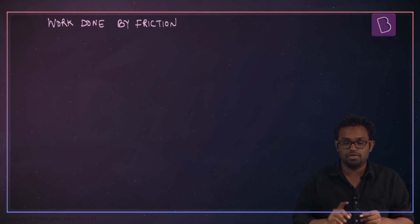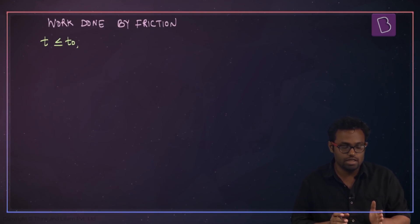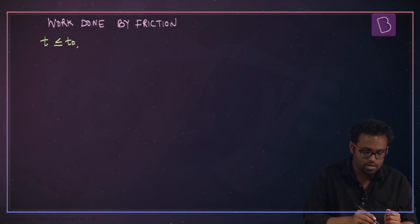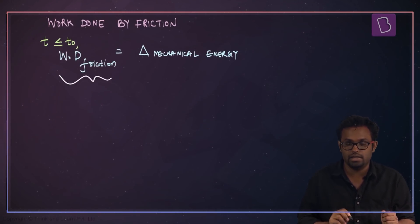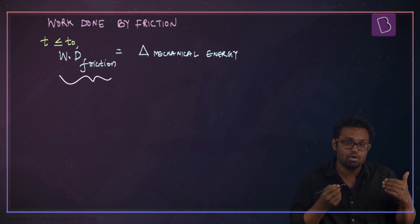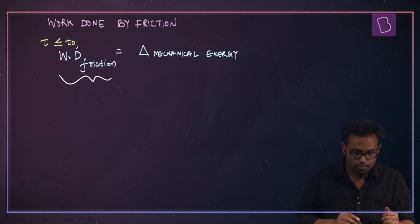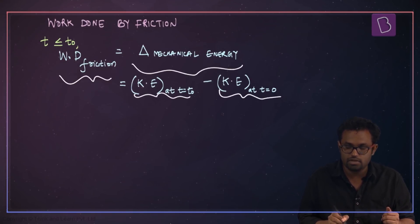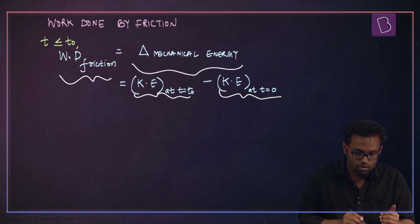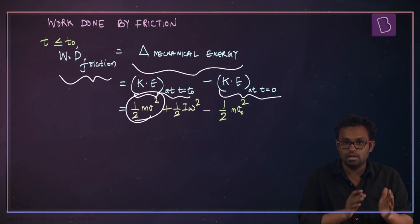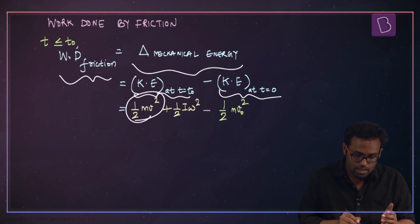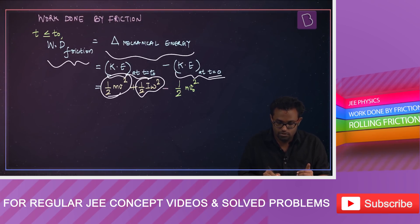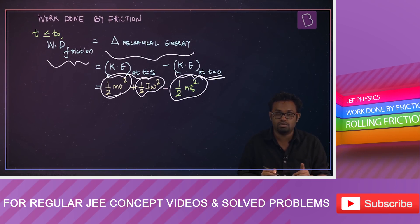Now let's talk about the work done by friction. For some time t less than t₀, the work done by friction equals the change in mechanical energy, because friction is the only dissipative force present. That will be the kinetic energy at time t minus the kinetic energy at t equal to zero. At t₀ the kinetic energy is (1/2)mv² (linear) plus (1/2)Iω² (rotational), minus the initial kinetic energy (1/2)mv₀².